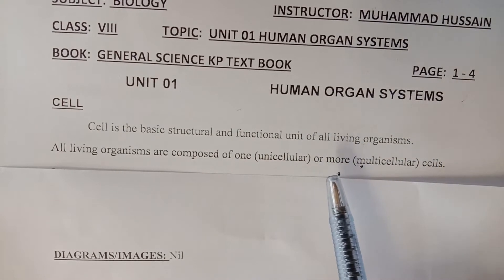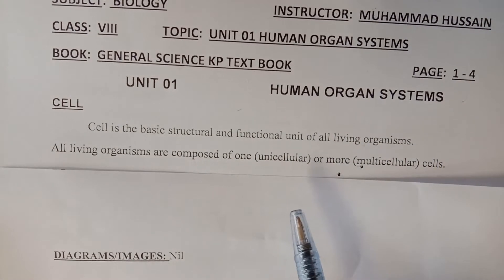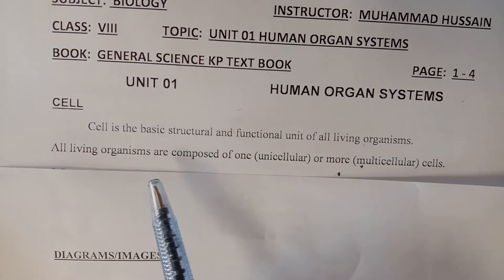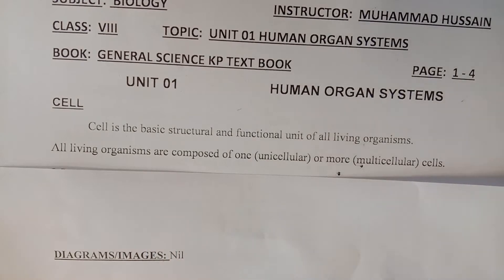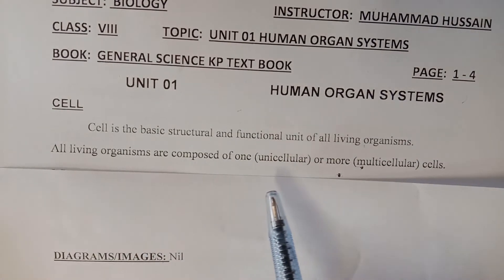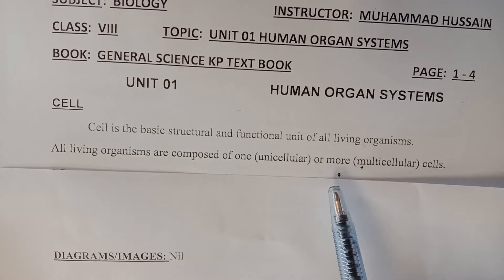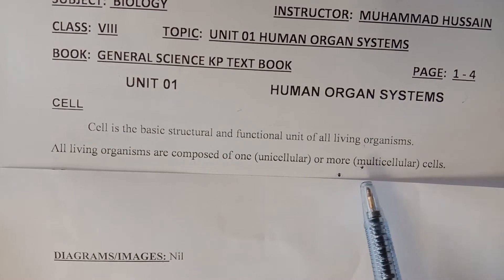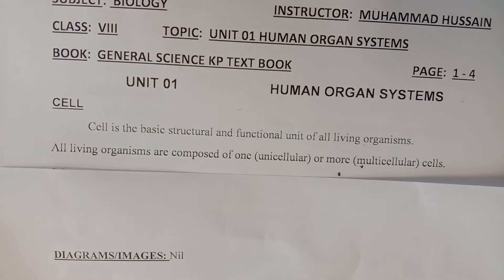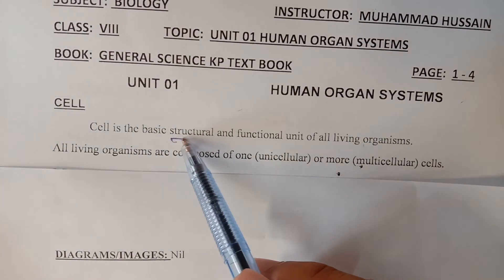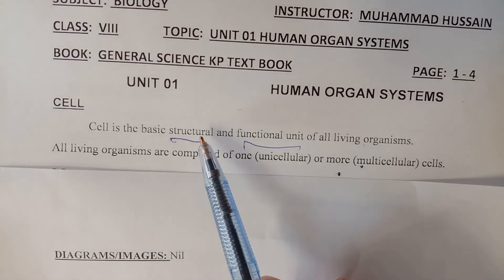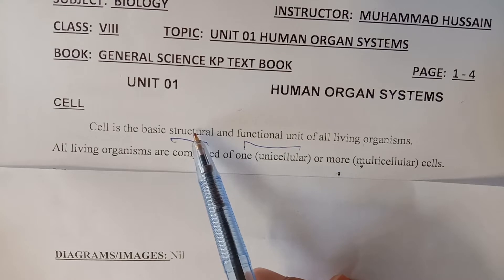First, I will define the cell. Cell is the basic structural and functional unit of all living organisms. All living organisms are composed of one cell (unicellular) or more cells (multicellular). The definition explains two terms: structural unit and functional unit. Structural unit means that all living organisms are made of cells.